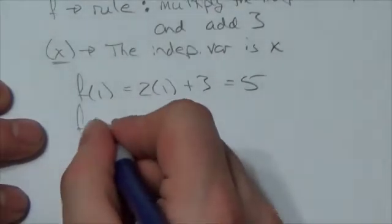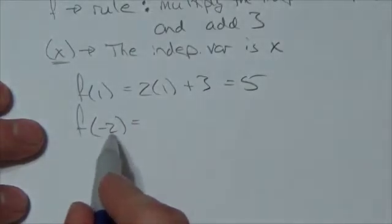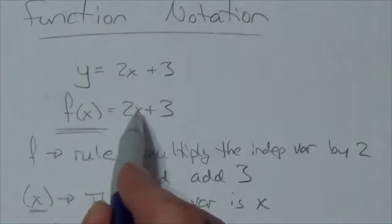If I make this, you know, like negative 2. Again, this is now replacing the independent variable. So because it's replaced the x, it replaces the x here.